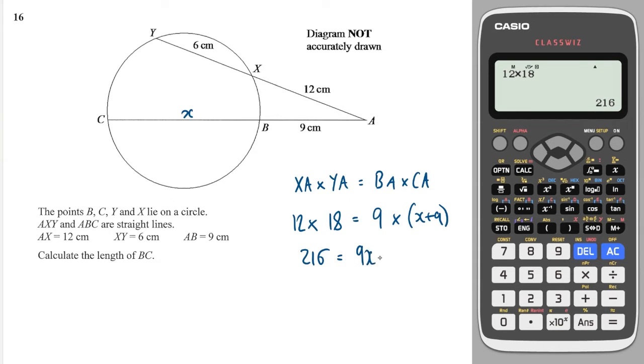We get 9X plus 81, minus 81 from both sides, gives me 135, is equal to 9X, and then divide through by 9, and we get 15.